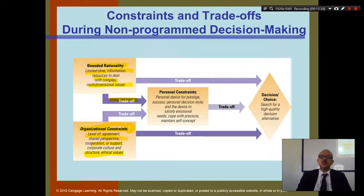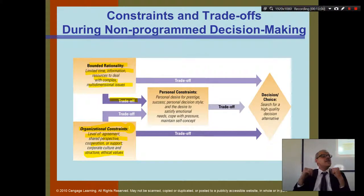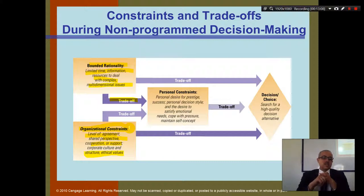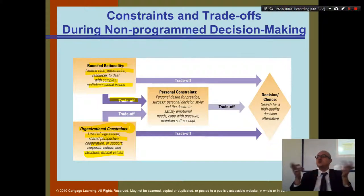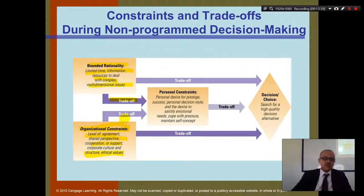Bounded rationality also includes organizational constraints: level of agreement, shared perspective, culture, corporate structure, and ethical values. These make organizational decision-making more difficult than individual decision-making. If you are alone, you can simply decide to quit. But if you are an organization, you cannot quit easily — you must consider everyone else, company culture, and structure. Making decisions in organizations requires more time and is more complex.